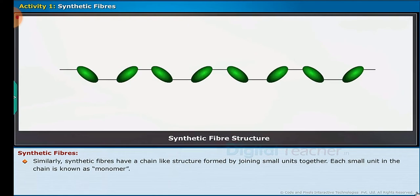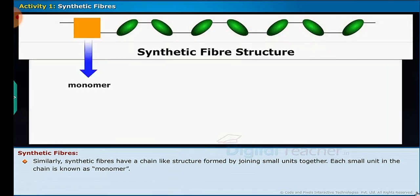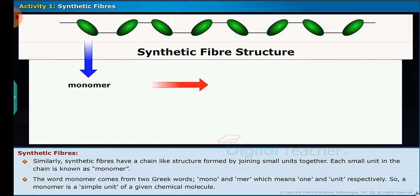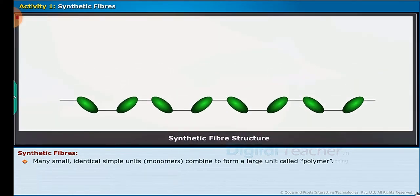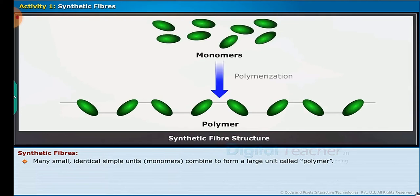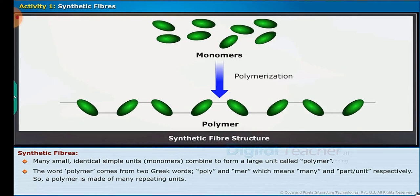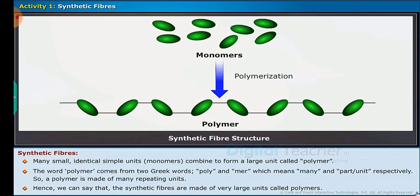Similarly, synthetic fibers have a chain-like structure formed by joining small units together. Each small unit in the chain is known as a monomer. The word monomer comes from two Greek words — mono and mer — which mean one and unit respectively. So a monomer is a simple unit of a given chemical molecule. Many such identical simple units called monomers combine to form a large unit called a polymer. The word polymer comes from two Greek words — poly and mer — which mean many and part or unit respectively. So a polymer is made of many repeating units, and synthetic fibers are made of very large units called polymers.